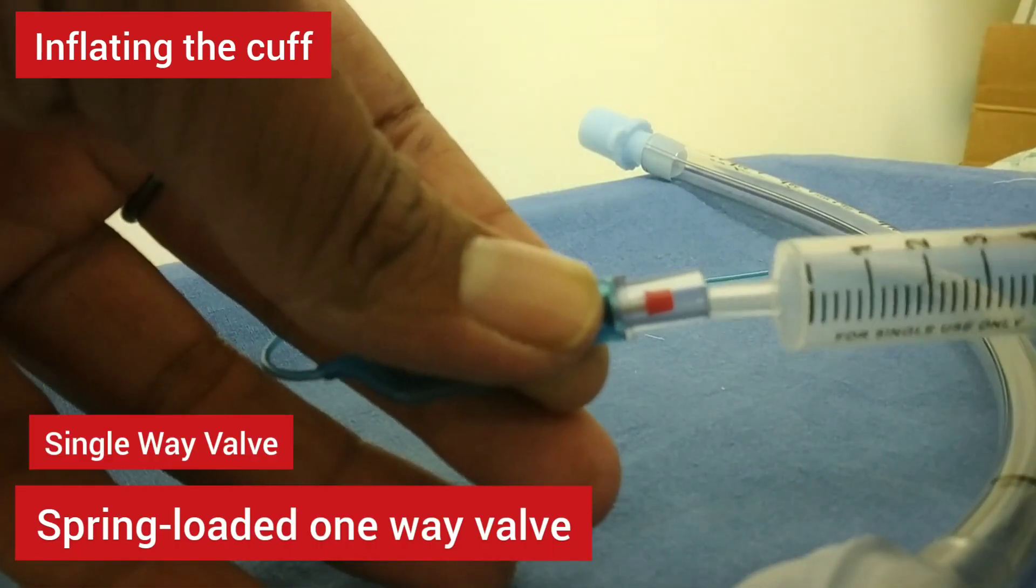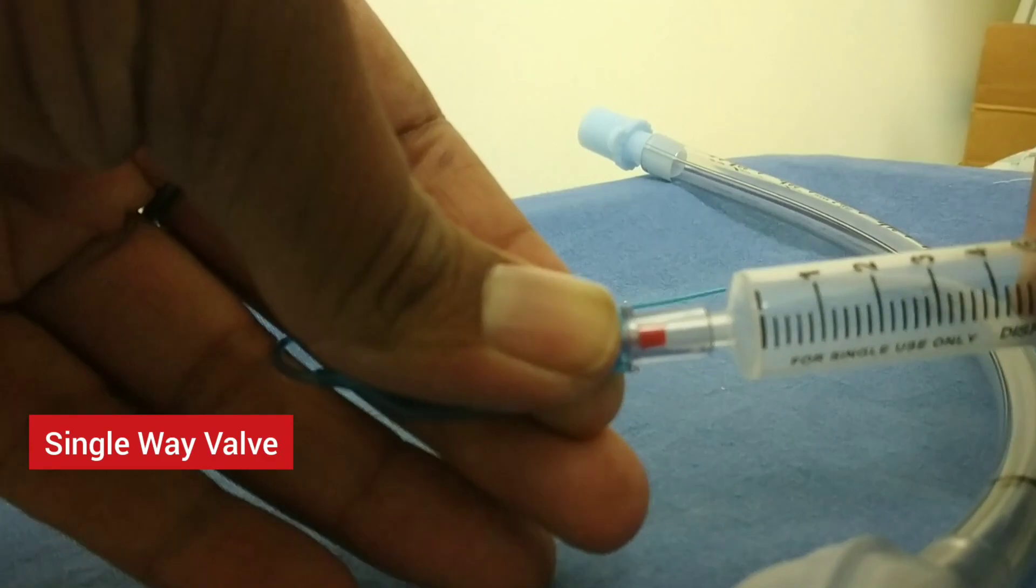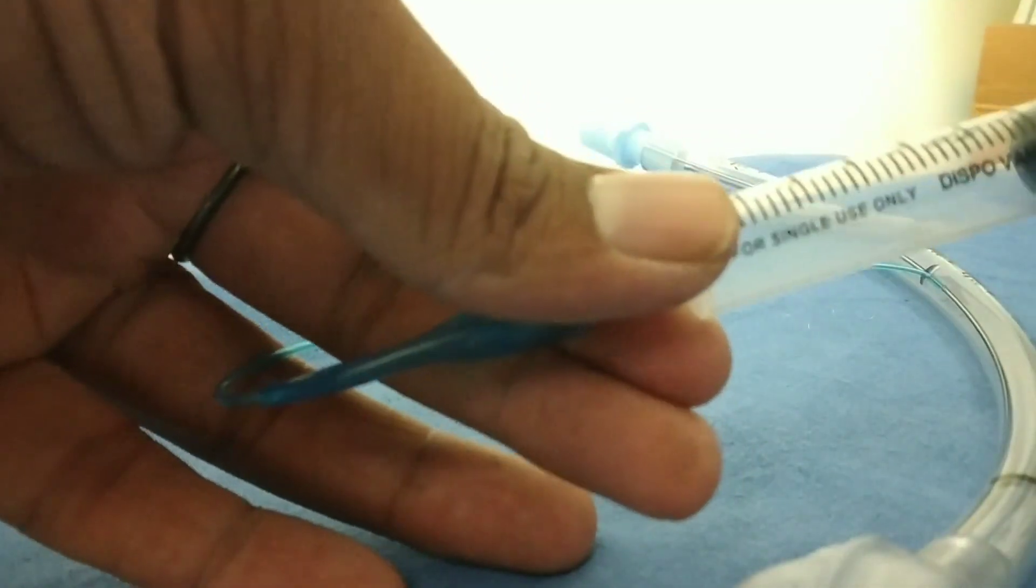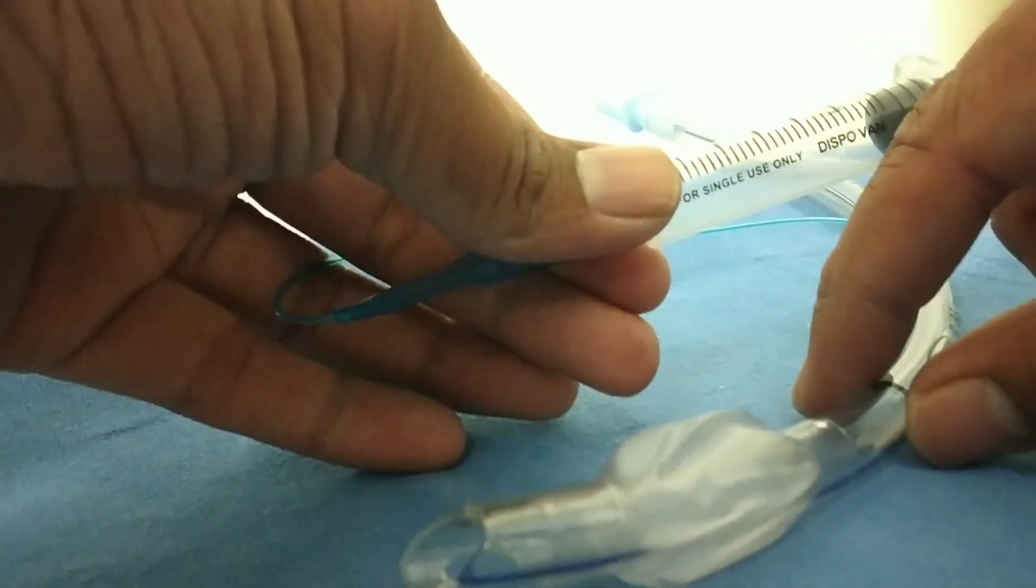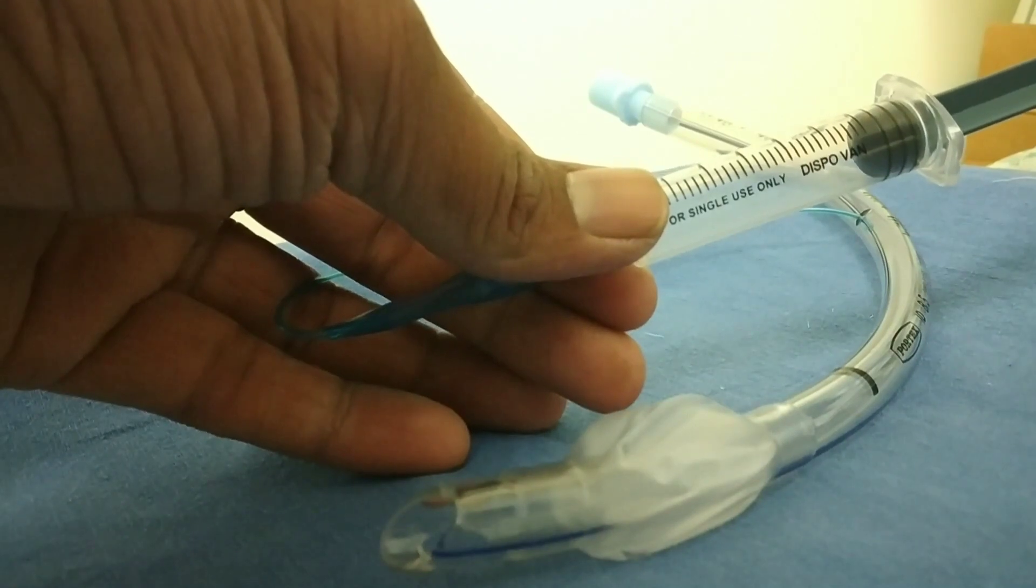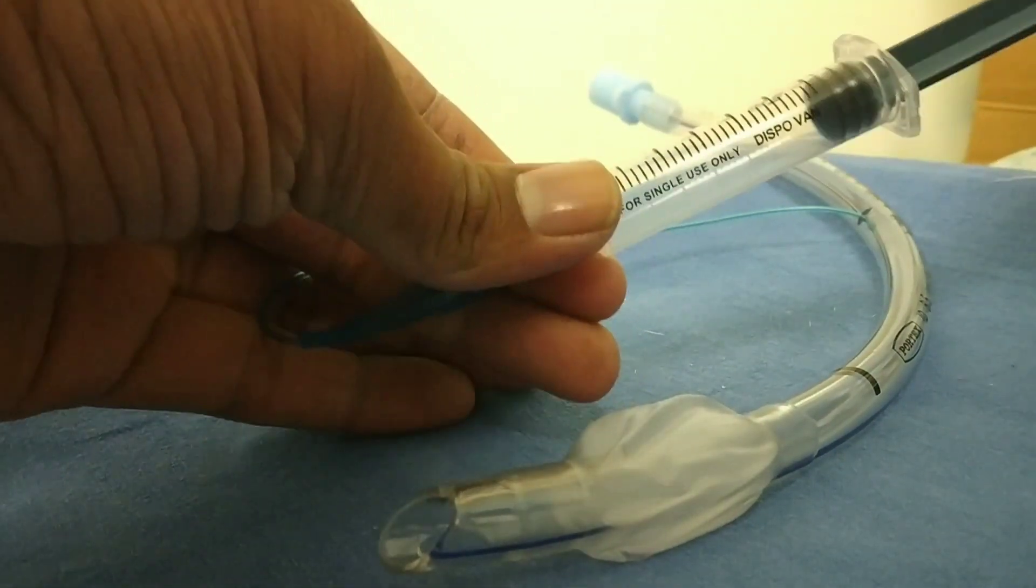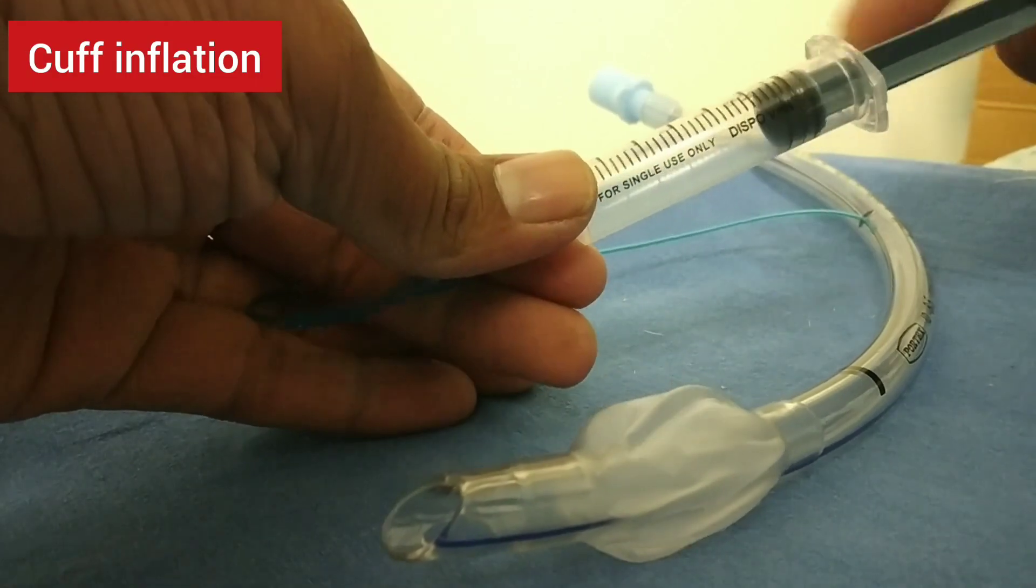After the ET tube is placed, the cuff is inflated. With the syringe, we flush air into the pilot balloon which has a one-way valve. We can see the cuff inflation when the air is flushed into the pilot balloon.